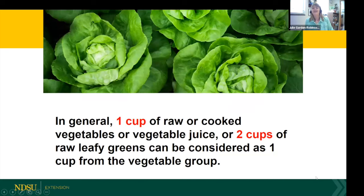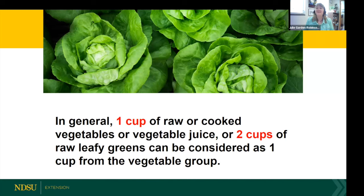Here's how we count fruits and vegetables in the current MyPlate guidance, which is based on the U.S. Dietary Guidelines for Americans — updated every five years. The recommendations often hold steady or increase for fruits and vegetables. A cup of raw or cooked vegetables or vegetable juice, or two cups of leafy greens, counts as one cup from the vegetable group. I'll be covering shortly just how many cups each of us should be consuming to meet the guidelines.